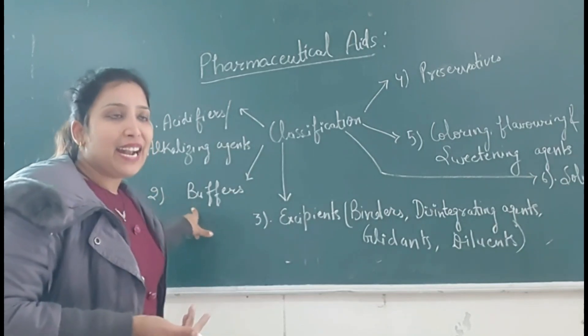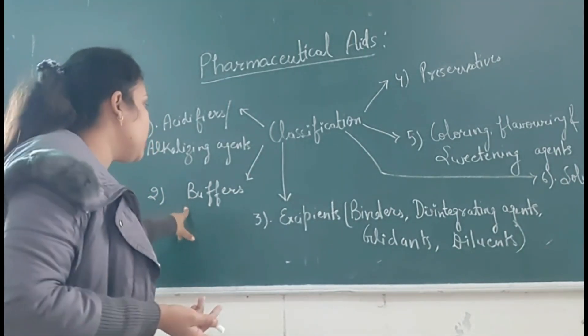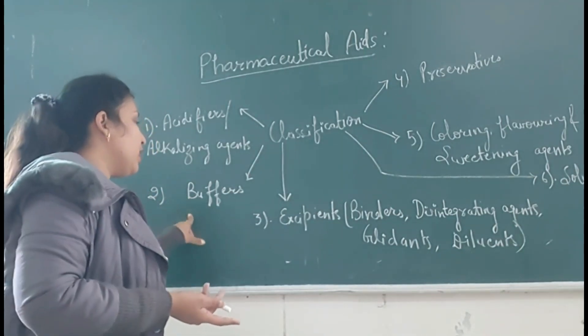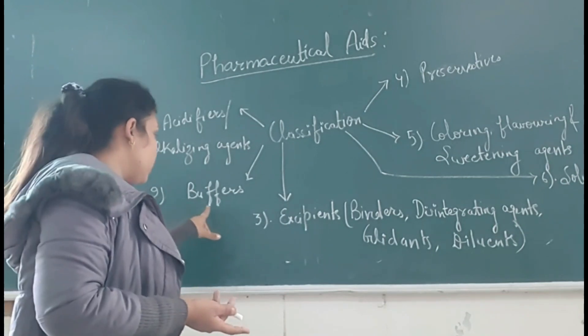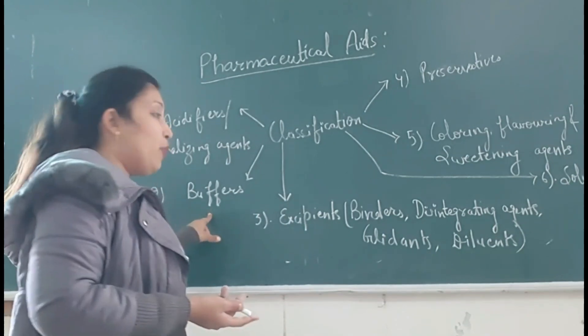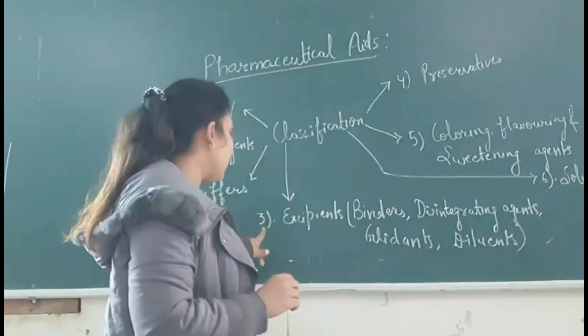The next classification is buffers. Buffers are added to maintain the pH of the product in the formulation. Examples include phosphate buffers and ammonium phosphate buffers.